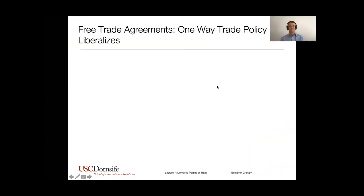Welcome to part two of our domestic politics of trade lecture. In this lecture, we're going to be talking about free trade agreements and industrial policy as two specific examples of trade policy, and again mapping different interest groups into support and opposition of these policies.